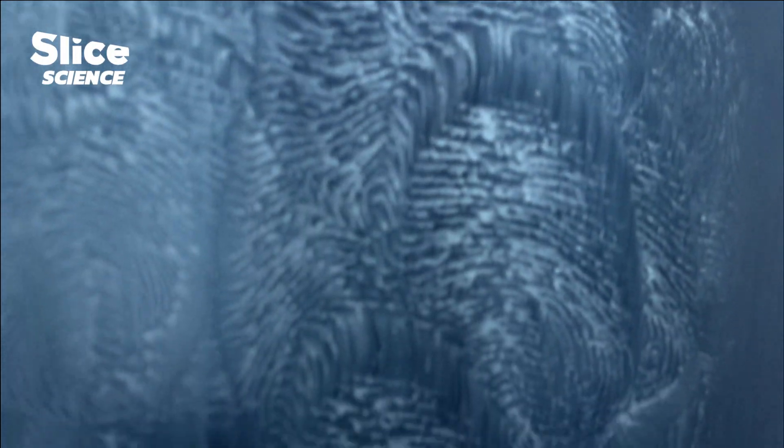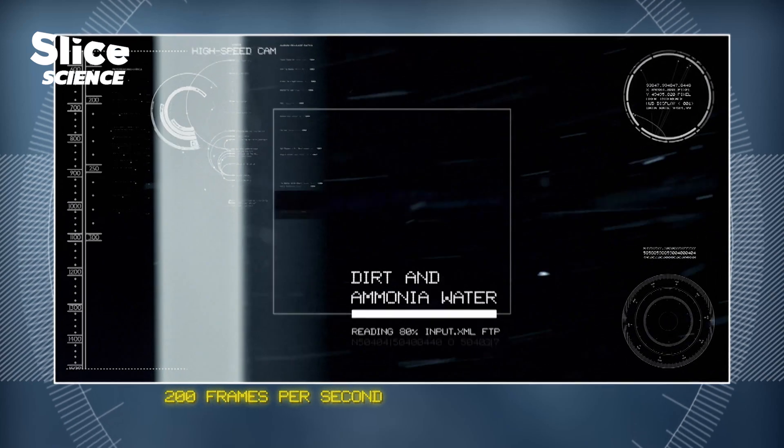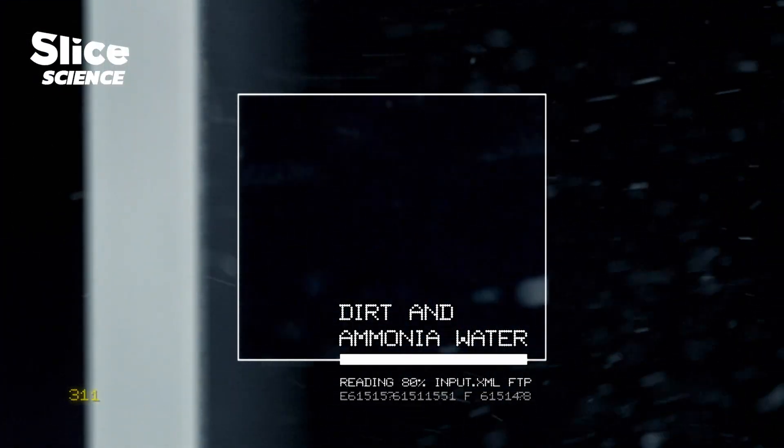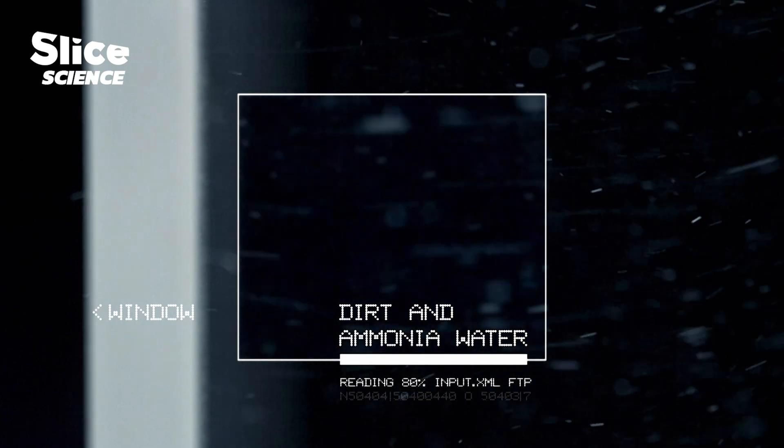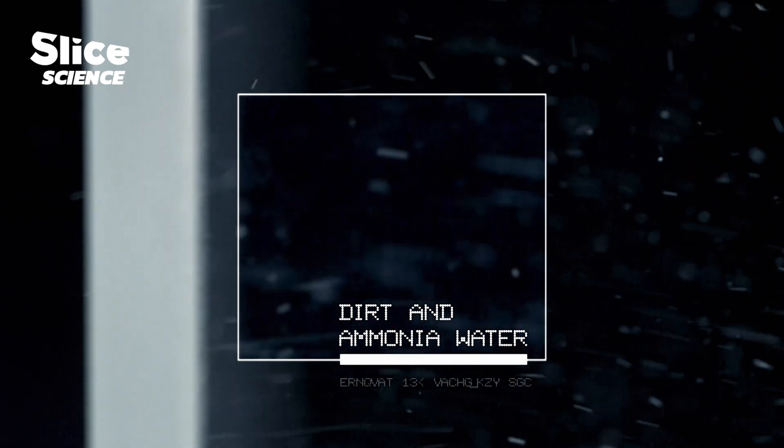Windows seem to attract dirt as if by magic. On the left is the cross section of a window. The ammonia solution gives the glass and the dirt a negative electrostatic charge, so the dirt gets repelled from the glass.